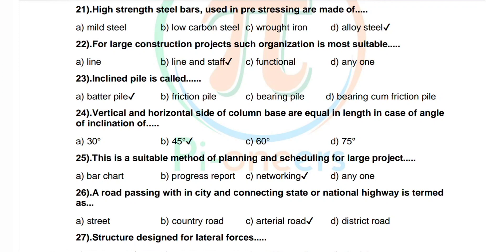Question 23: A highly inclined pile is called. Options: batter pile, friction pile, bearing pile, bearing cum friction pile. Correct answer is batter pile. Question 24: Vertical and horizontal sides of column base are equal in length in case of angle of inclination of. Options: 30, 45, 60, 75. Correct answer is 45.